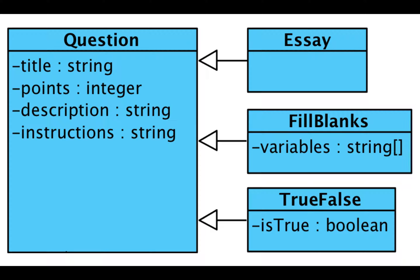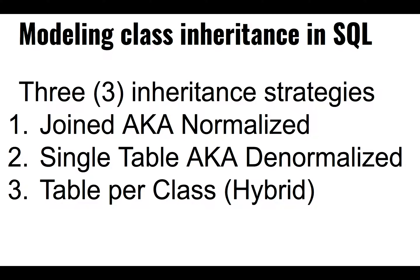We saw a couple of algorithms a few weeks back that helped us convert tables and one-to-many relationships into an equivalent relational schema, and vice versa — from a relational schema into an equivalent class diagram. But nowhere have we looked at how to convert inheritance hierarchies. So we have three different strategies: the joined, single table, and table per class strategies.